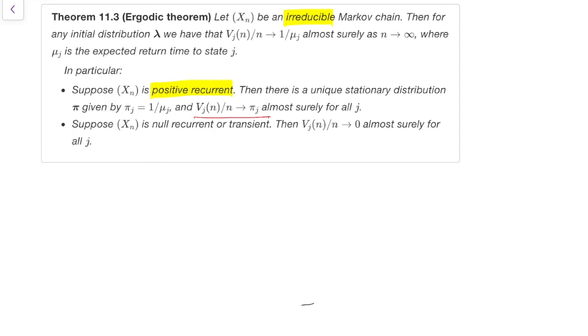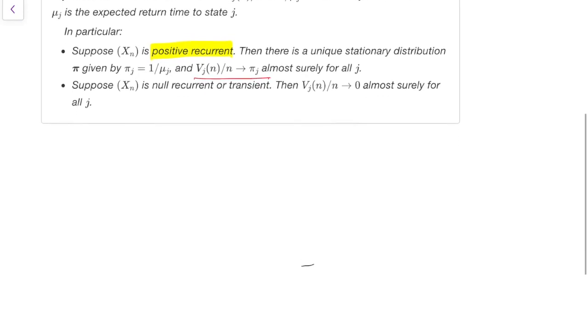Note here that we don't require aperiodicity. The idea here is because we're kind of averaging over a long amount of time, this is kind of a long-run average rather than a specific point in the future. The periodic behavior will just average out and isn't important. So here we don't need periodicity. Again, there's an optional proof of this in the notes that's non-examinable.